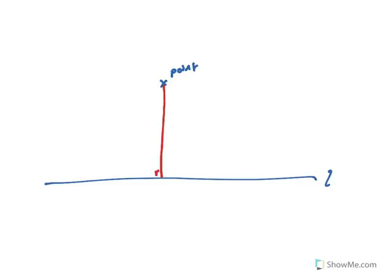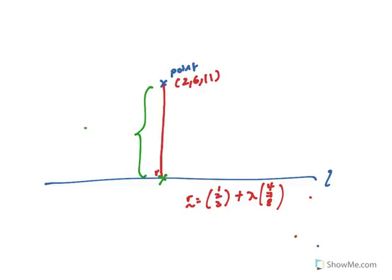Okay, number one — what we can do. The first case: some questions ask you to find the position vector. For example, this is the line: (1,2,3) + λ(4,7,8), and this is the point (2,6,11). We want to find this point, and we want to find the perpendicular distance.